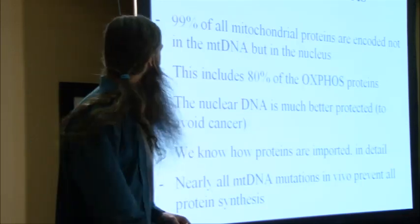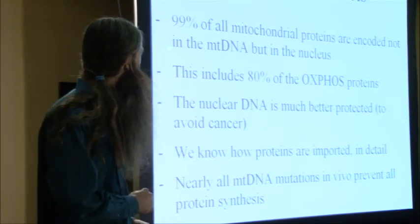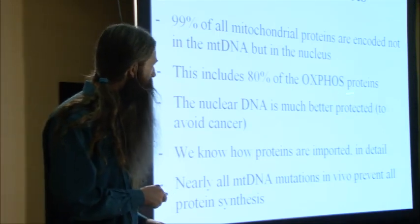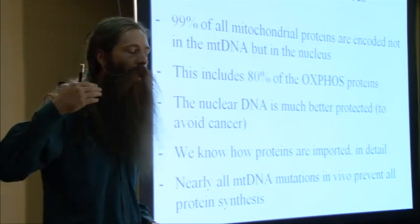So 99% — more than 1,000 relative to only 13 proteins — are nuclear-encoded, including most of the proteins involved in oxidative phosphorylation, which is one of the key things mitochondria do. It's basically the chemistry of breathing: the way energy is extracted from nutrients by taking electrons out of molecules like sugars and fats and transferring them to oxygen to make water and carbon dioxide.